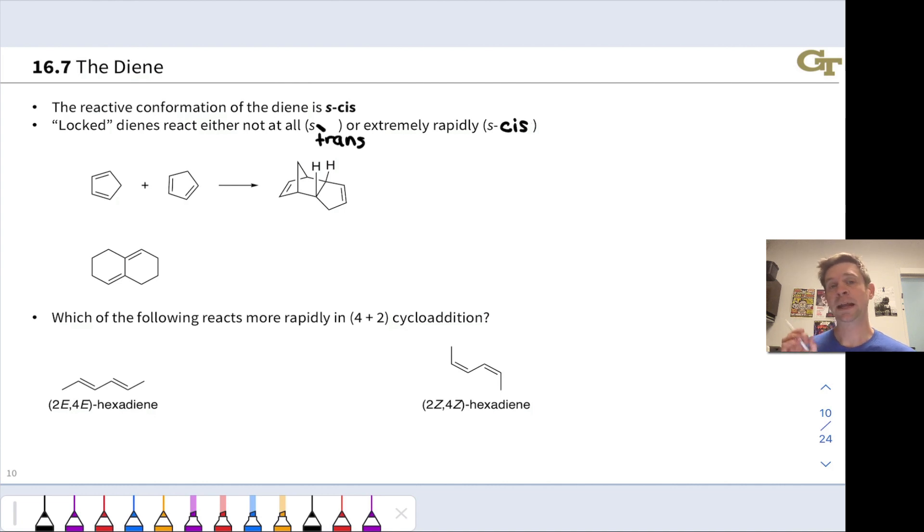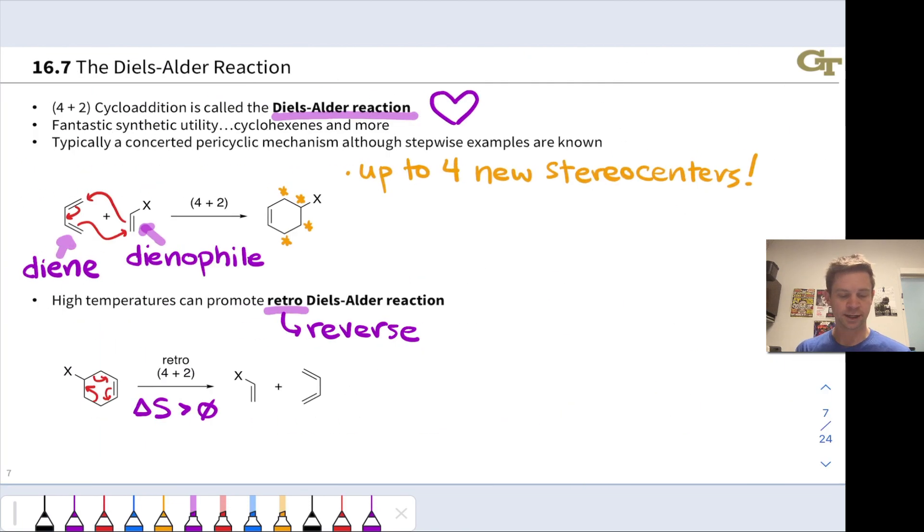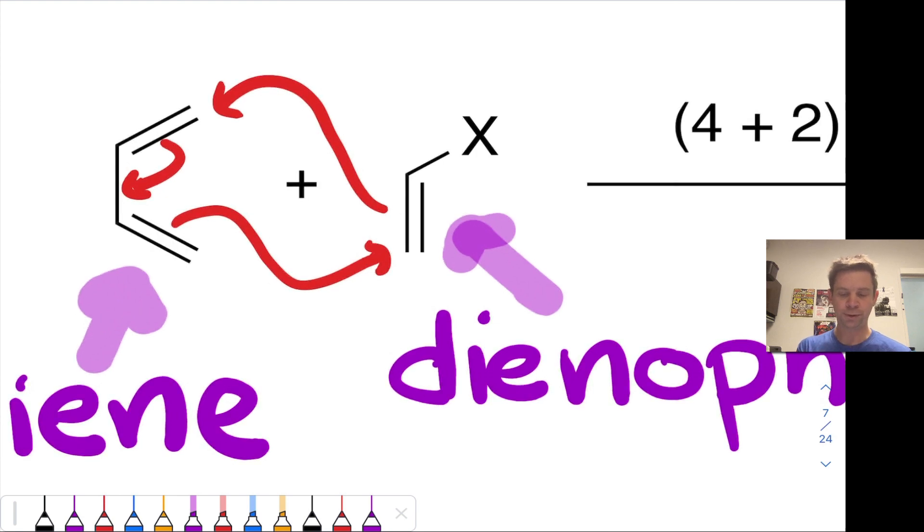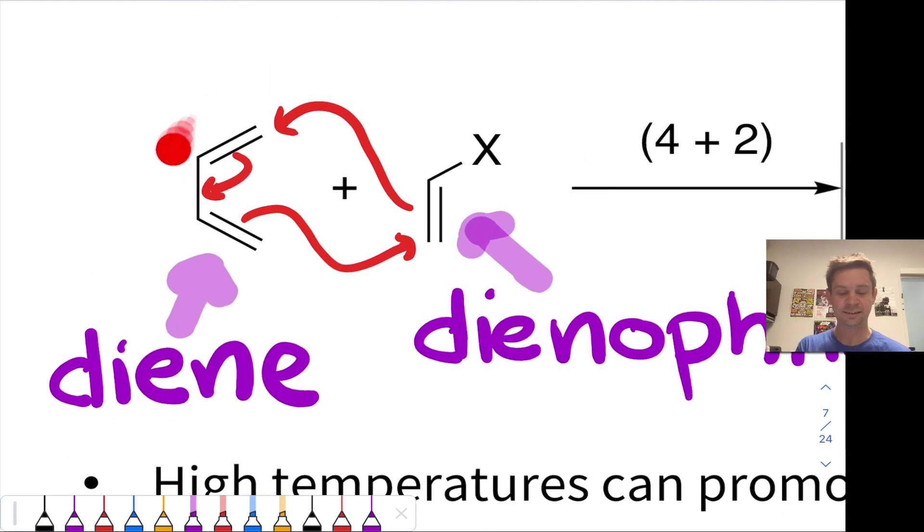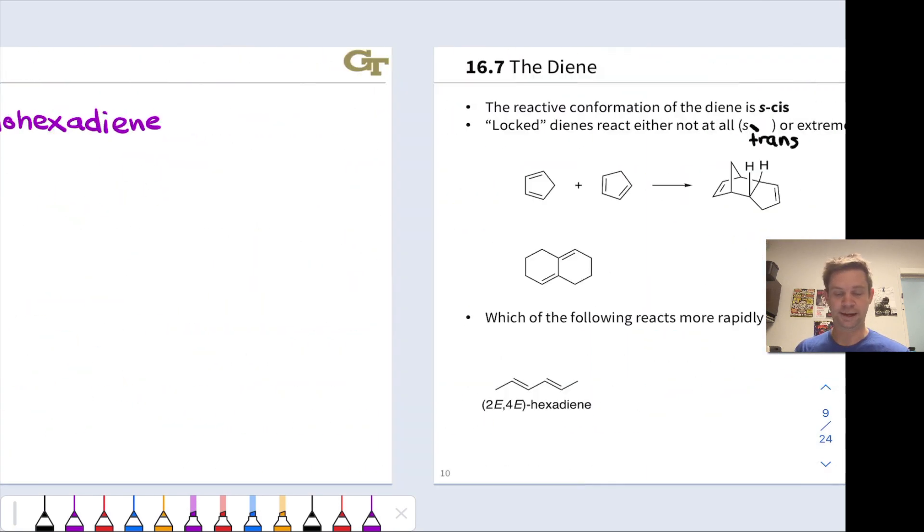The diene, in order to react in a Diels-Alder reaction, must be in the S-cis conformation, and this is because both bonds to the termini of the diene are made at the same time. If we back up to our classic example of the electron flow, both bonds here are made at the same time, and in order for that to happen, both of these termini of the butadiene have to be relatively close to each other and relatively close to these carbons of the dienophile, and so only the S-cis conformation, which is what you're seeing right here, is reactive in the Diels-Alder reaction.